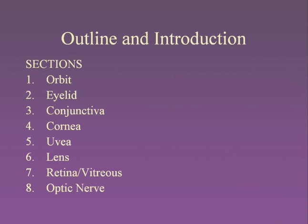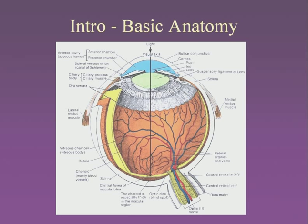This lecture is going to cover the eight sections of the ophthalmic system: the orbit, the eyelid and adnexa, the conjunctiva, the cornea, the uvea, the lens, the retina, and the optic nerve. I'm going to give you a basic anatomic introduction to the eye, because I know that this anatomy is not stressed during medical school. I received practically no training in the eyes in medical school, and I think that's common all around the world.